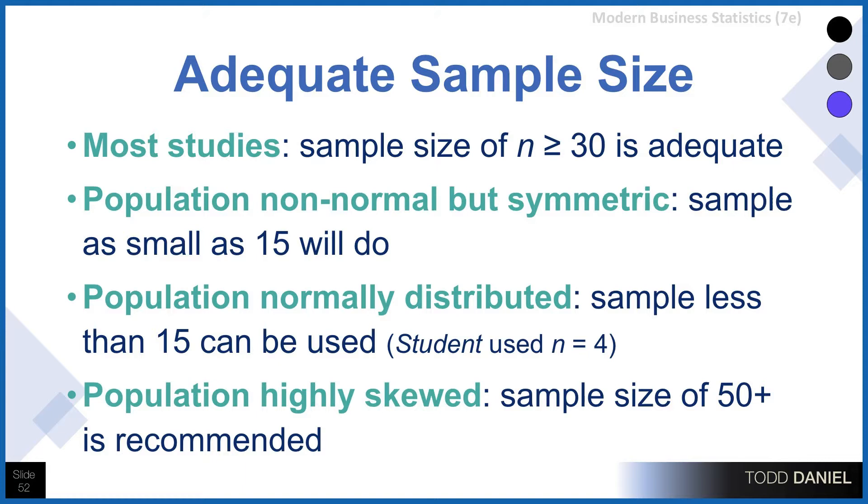If the population is normally distributed and you know that it is, you can use sample sizes as small as 15 and still get good estimators.